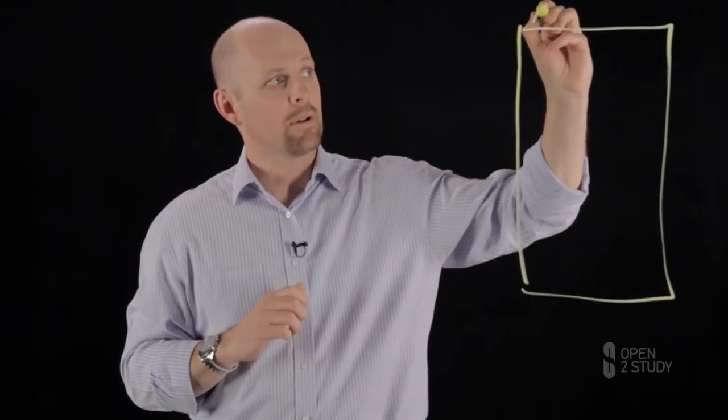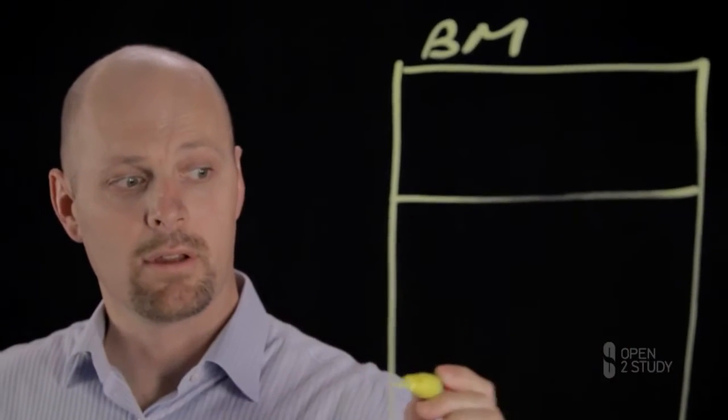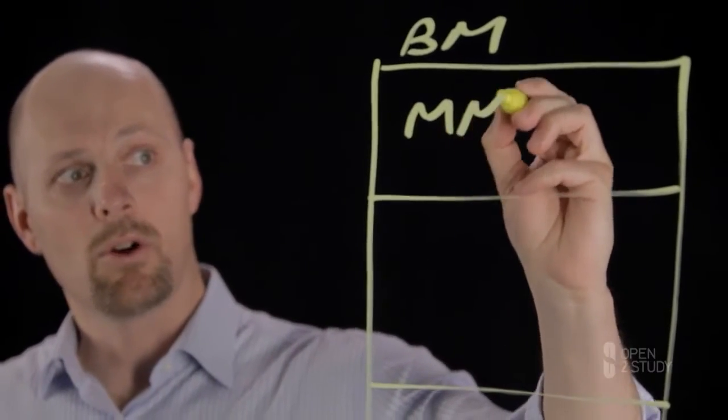Now, when we talk about a business model, we can look at it in the following way. This is a business model in an organization. It's broken up into three sections. At the top here, you have what's referred to as a market model.